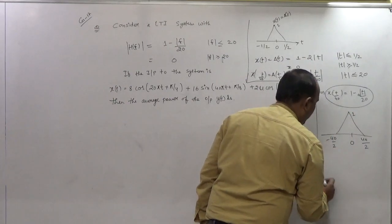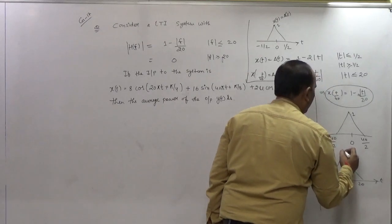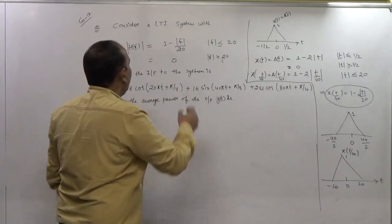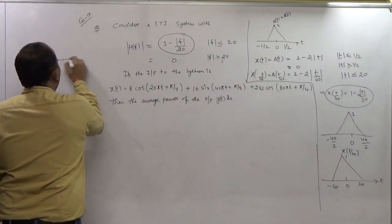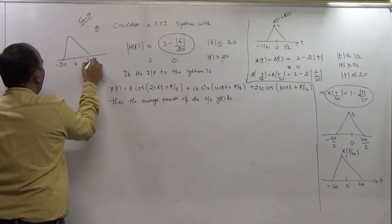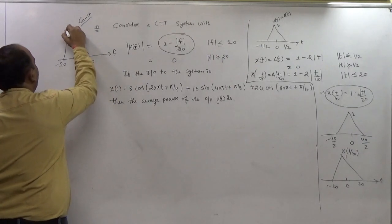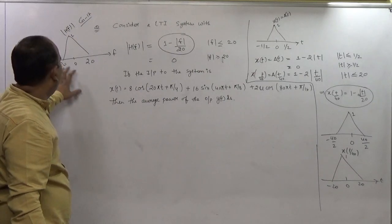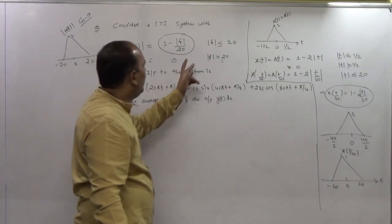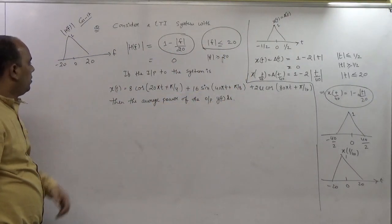So finally you get limits from -20 to +20 with T/40. The diagram of H(F) will be a triangular function in the frequency domain, with amplitude 1, ranging from -20 to +20. You can directly analyze it from this as well — the diagram is triangular from -20 to +20.